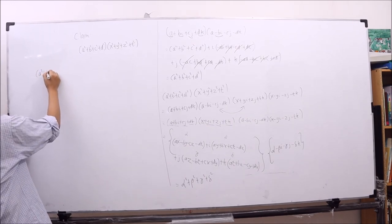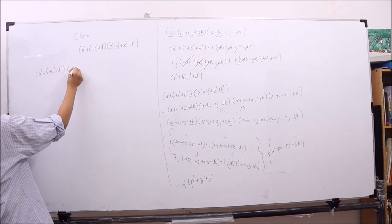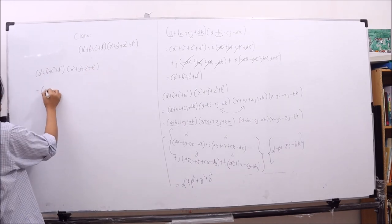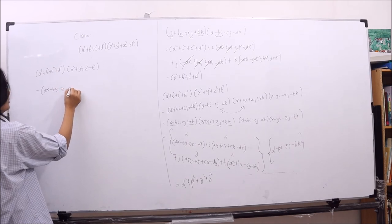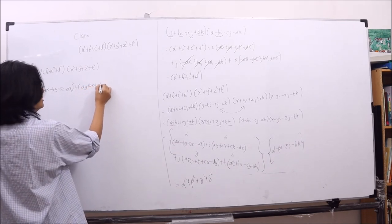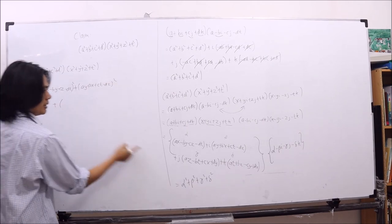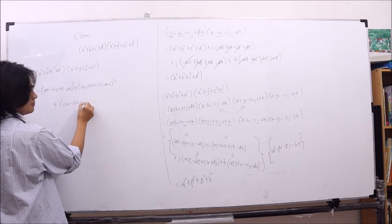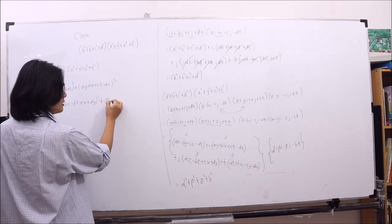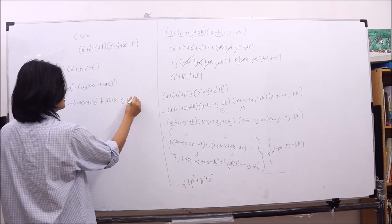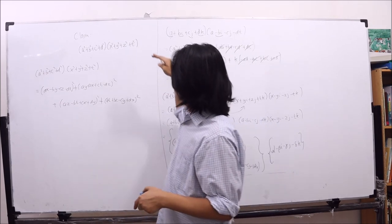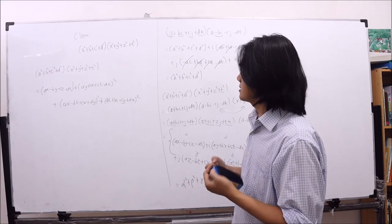So we can write: (a² + b² + c² + d²)(x² + y² + z² + t²) equals alpha² + beta² + gamma² + delta², where alpha = ax - by - cz - dt, beta = ay + bx + ct - dz, gamma = az - bt + cx + dy, delta = at + bz - cy + dx. This is the identity showing the product of two sums of four squares can again be expressed as a sum of four squares.